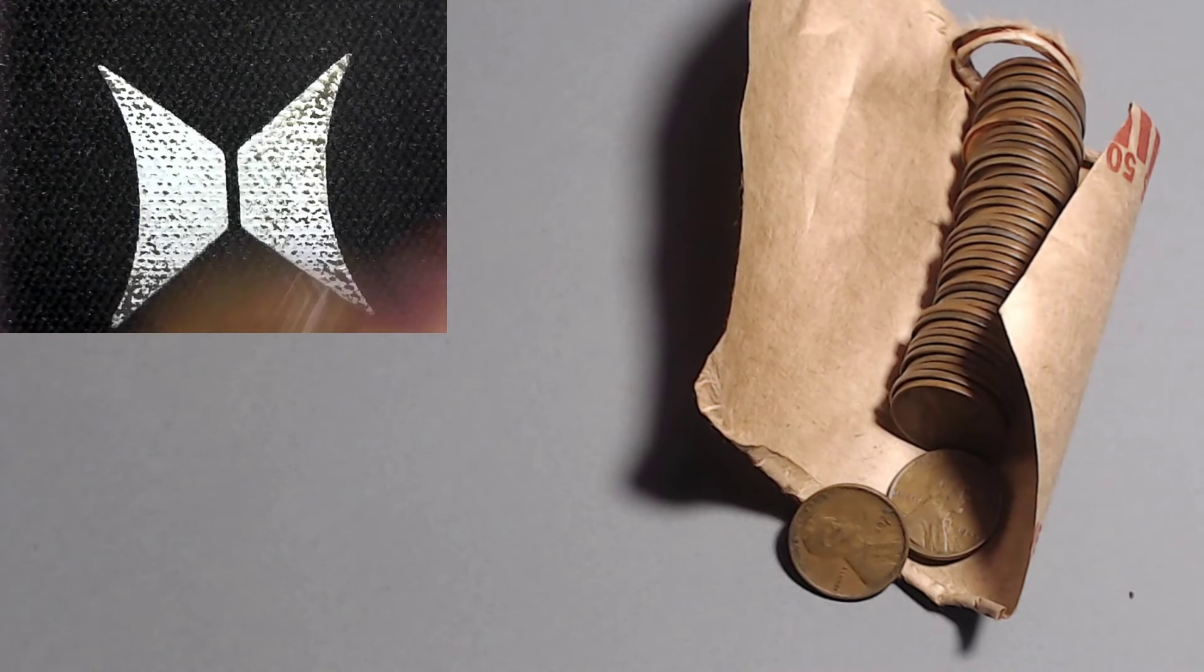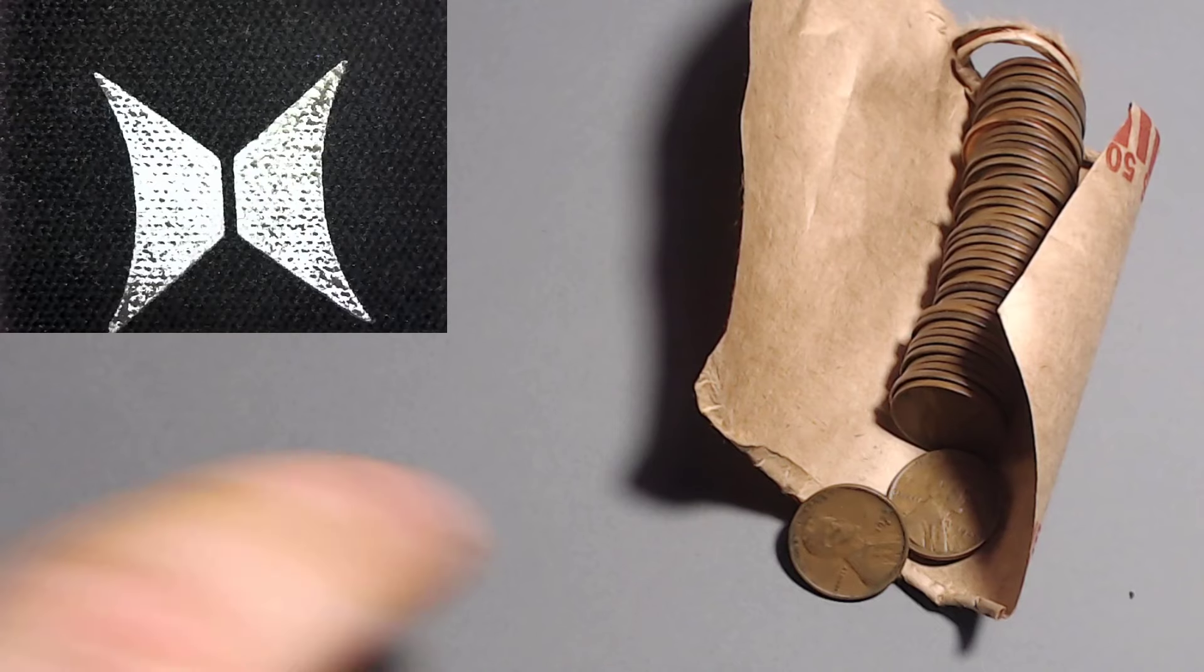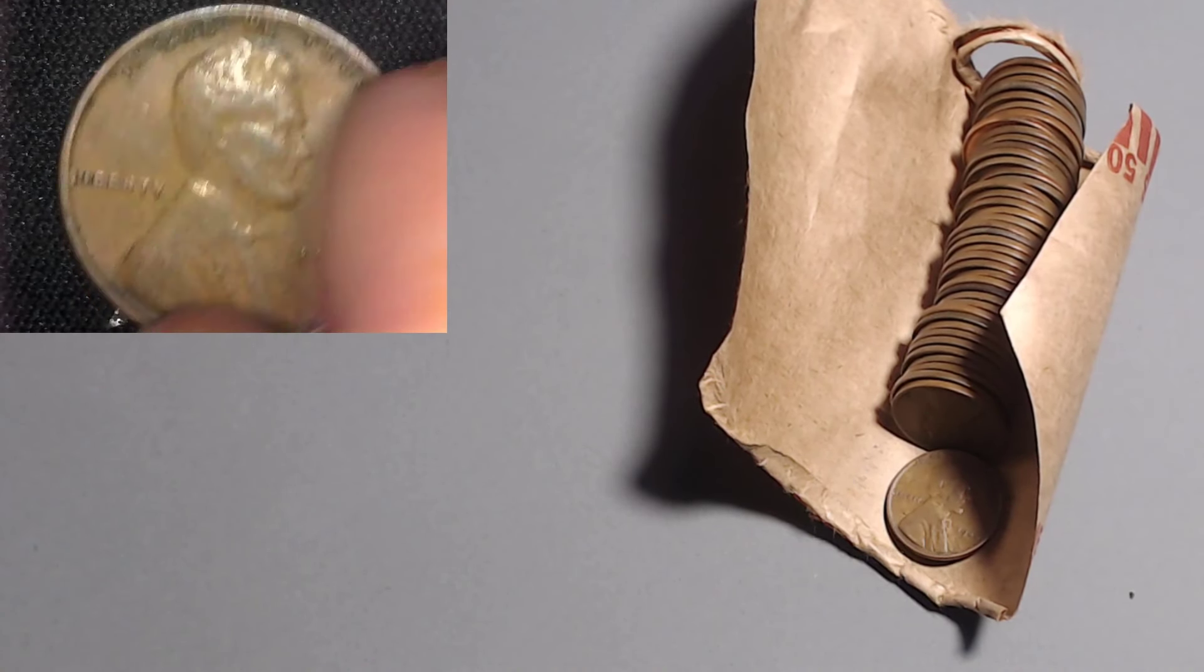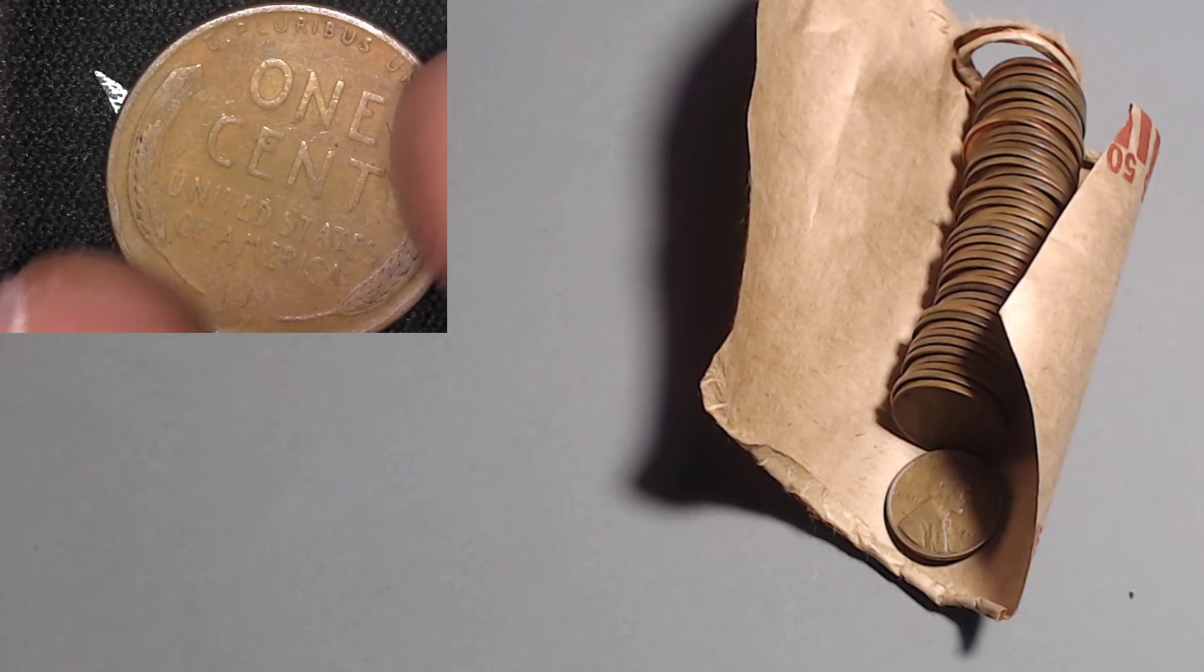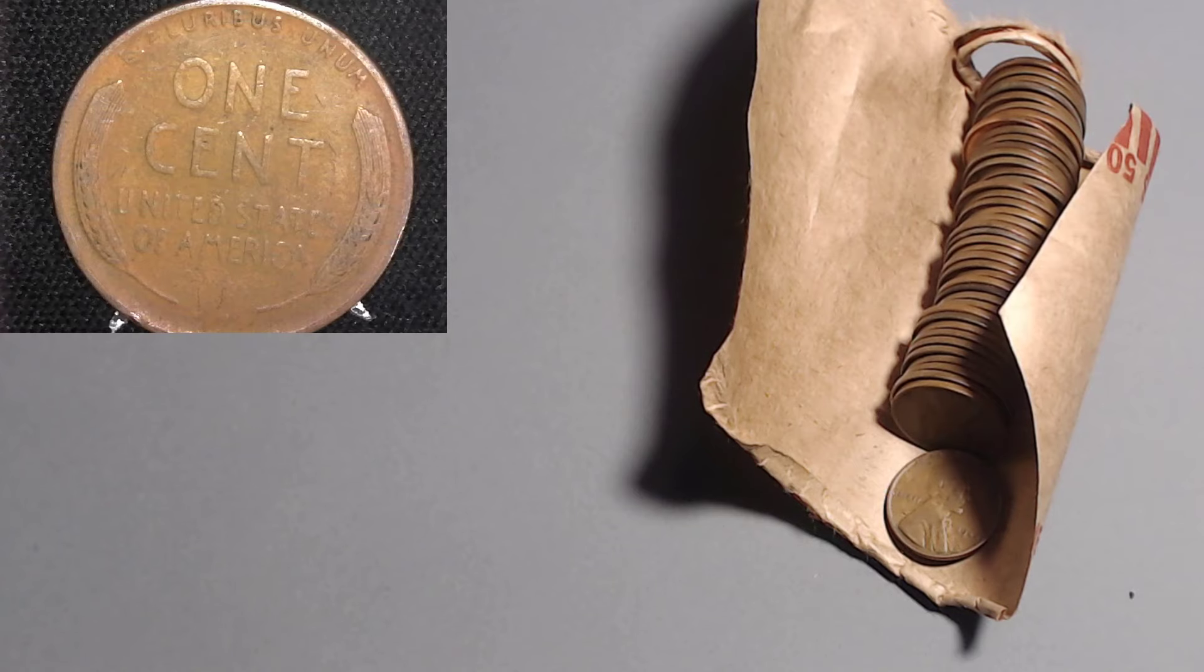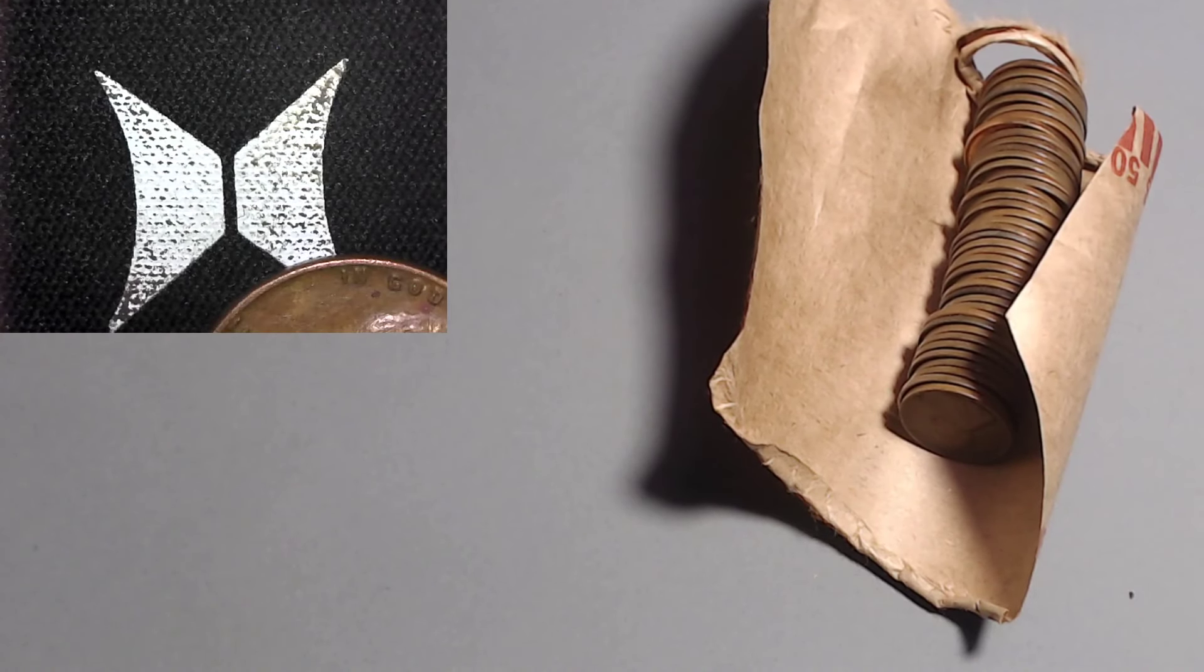Moving on to the next one. We've got a 1954 out of San Francisco with 96 million. A lot of S-mints in these rolls. We got a 1936 San Francisco. The 36 San Francisco with 29 million. I would consider that a key date or a semi-key date. But I will take that. That's going in my collection.